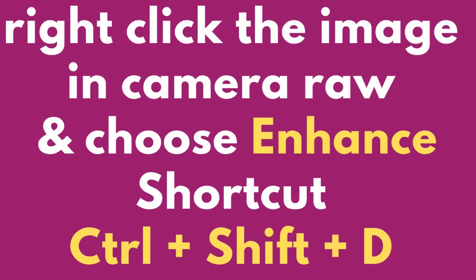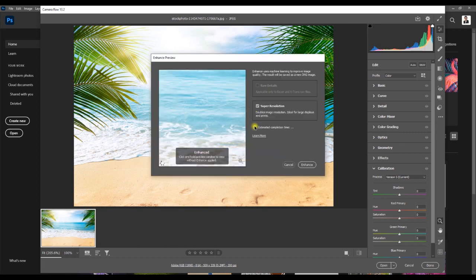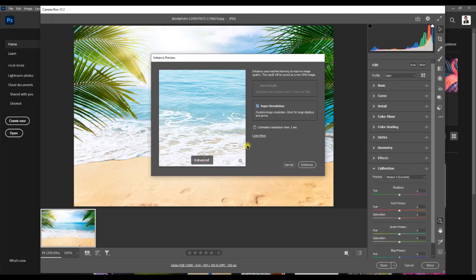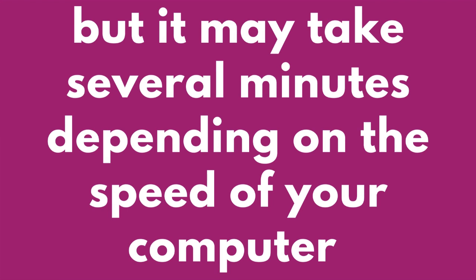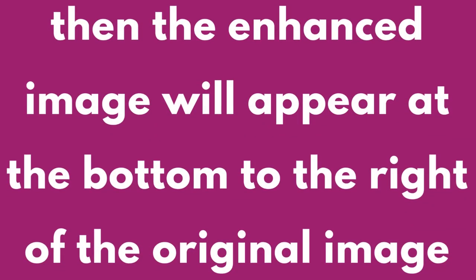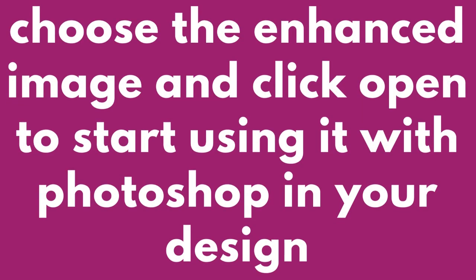Right-click the image in Camera Raw and choose Enhance — shortcut Control + Shift + D. A window called Enhance Preview will appear. Click Enhance; this will double the resolution of your image, but it may take several minutes depending on the speed of your computer. Then the enhanced image will appear at the bottom, to the right of the original image. Choose the enhanced image and click Open to start using it with Photoshop in your design.